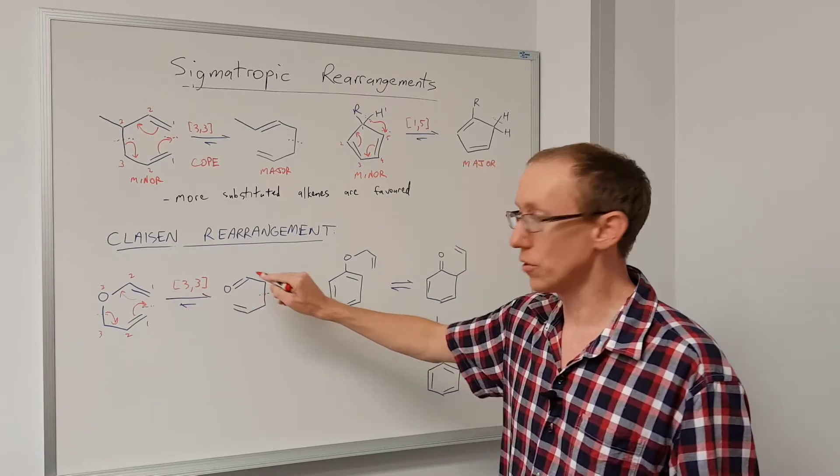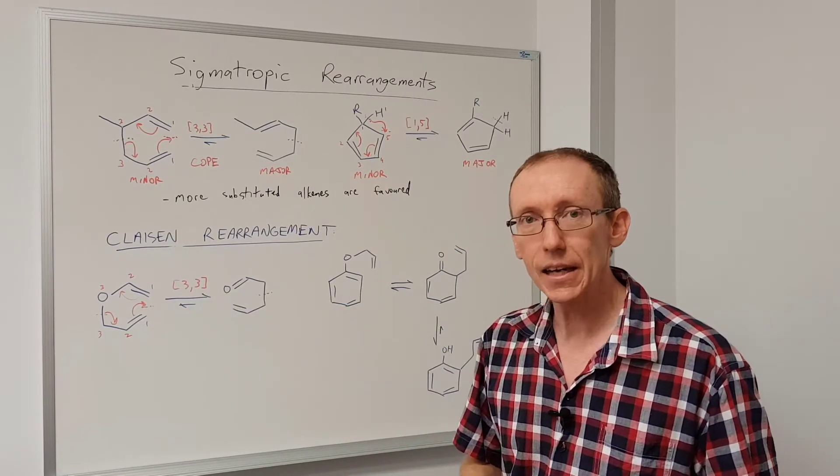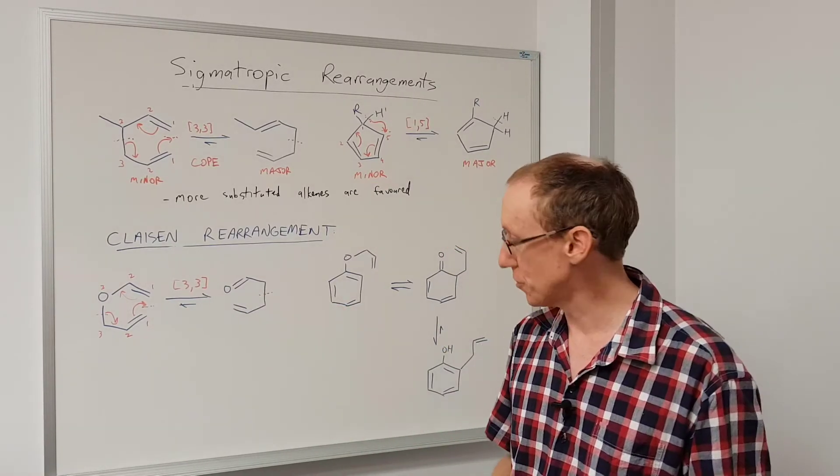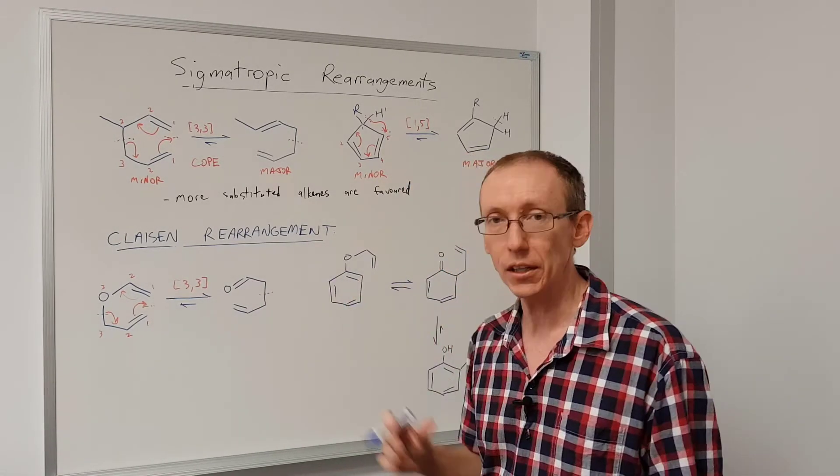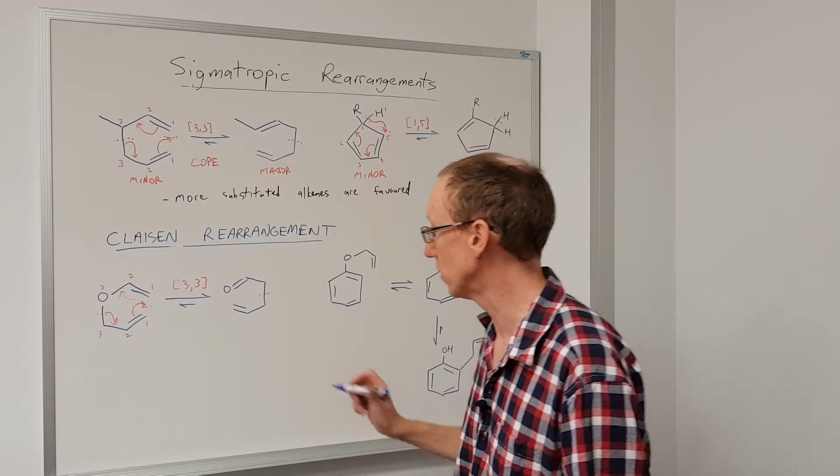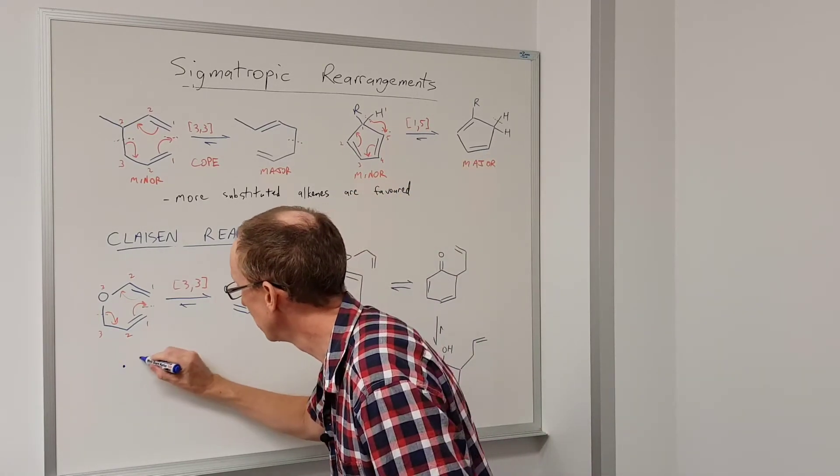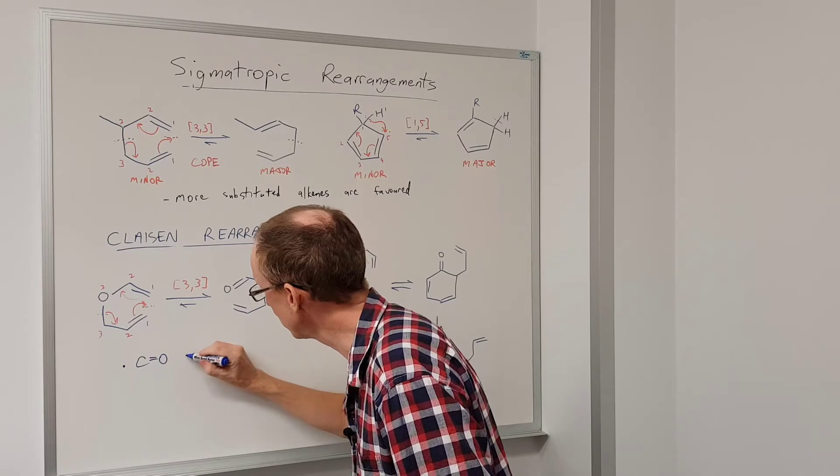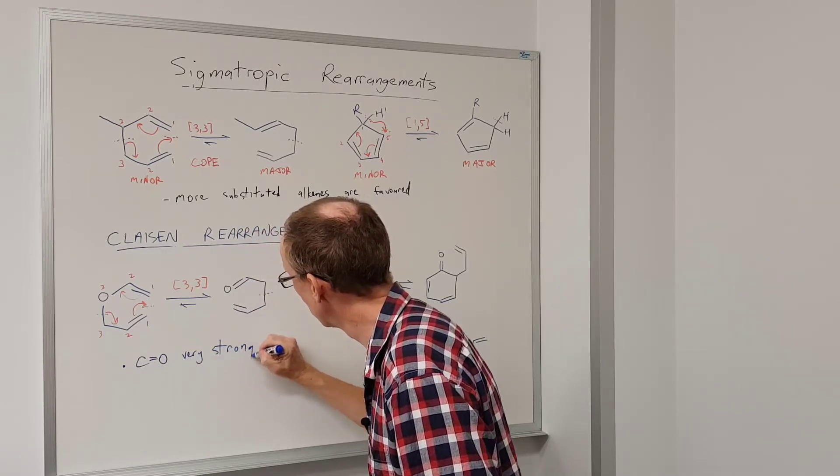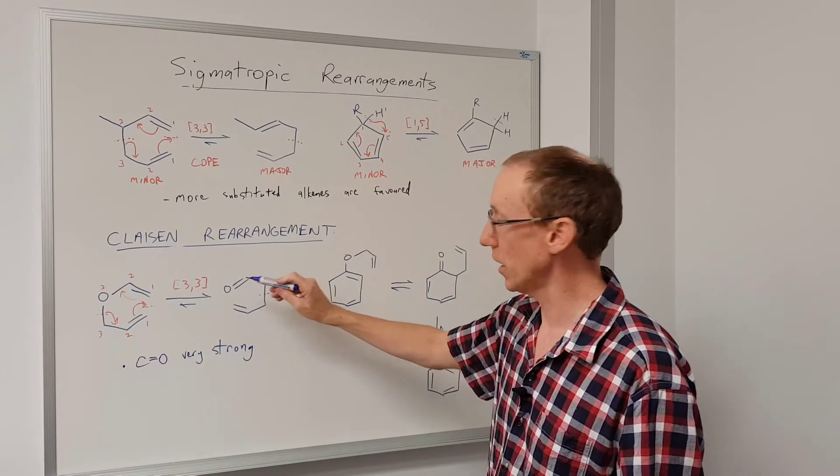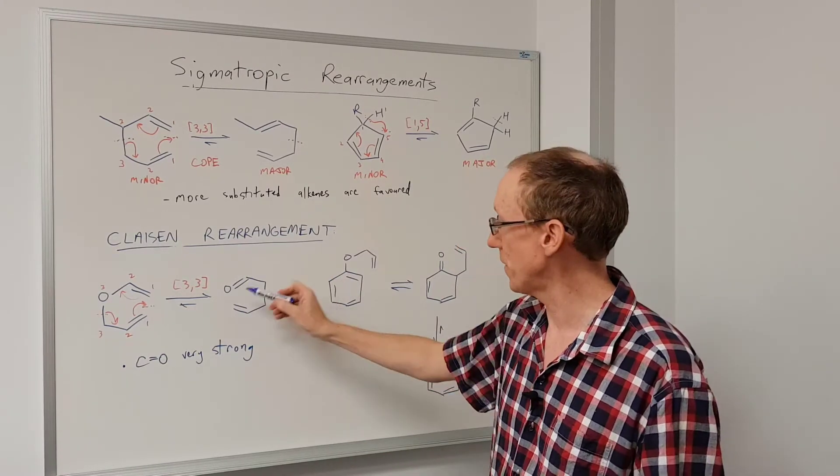This one lies over towards the right hand side because those carbonyl groups are particularly strong functional groups. They're particularly energetically favorable. CO double bonds are very strong, and so therefore this lies over towards the right hand side where we have that carbonyl group.